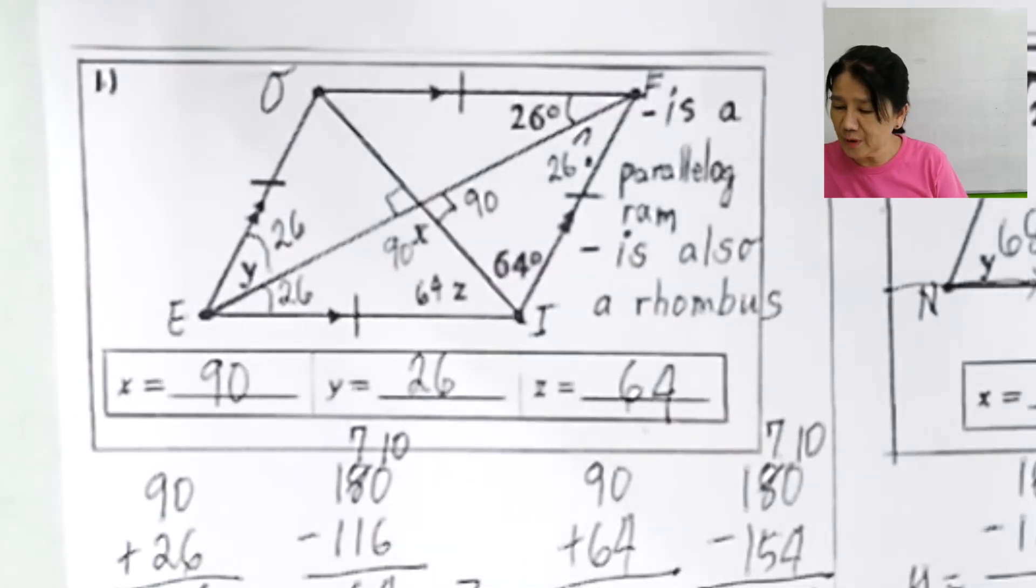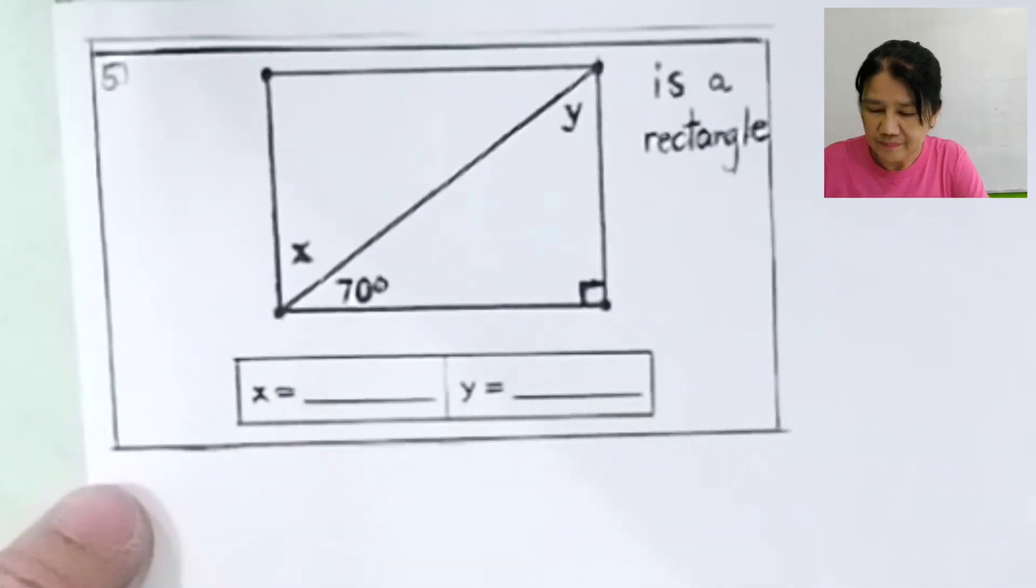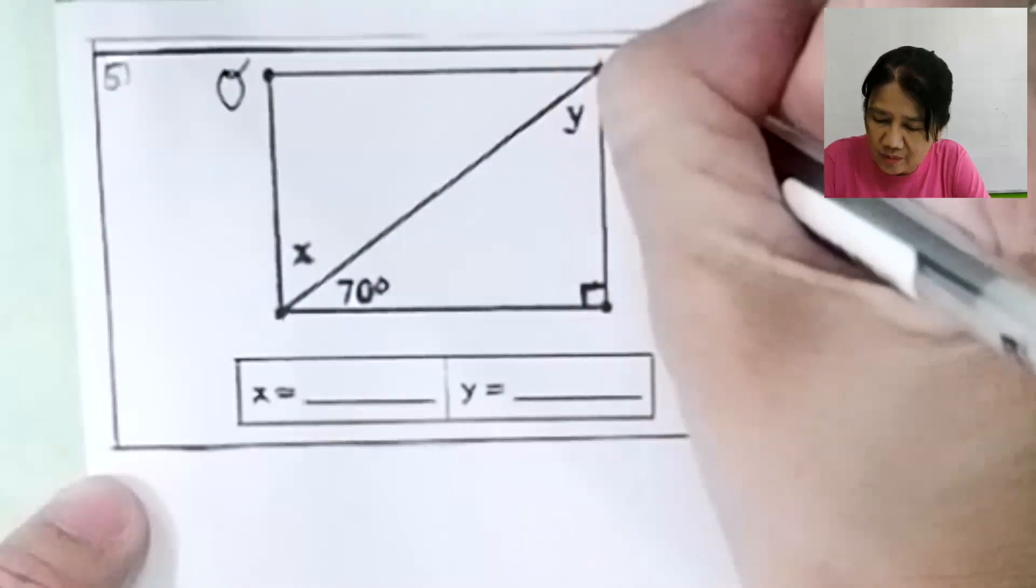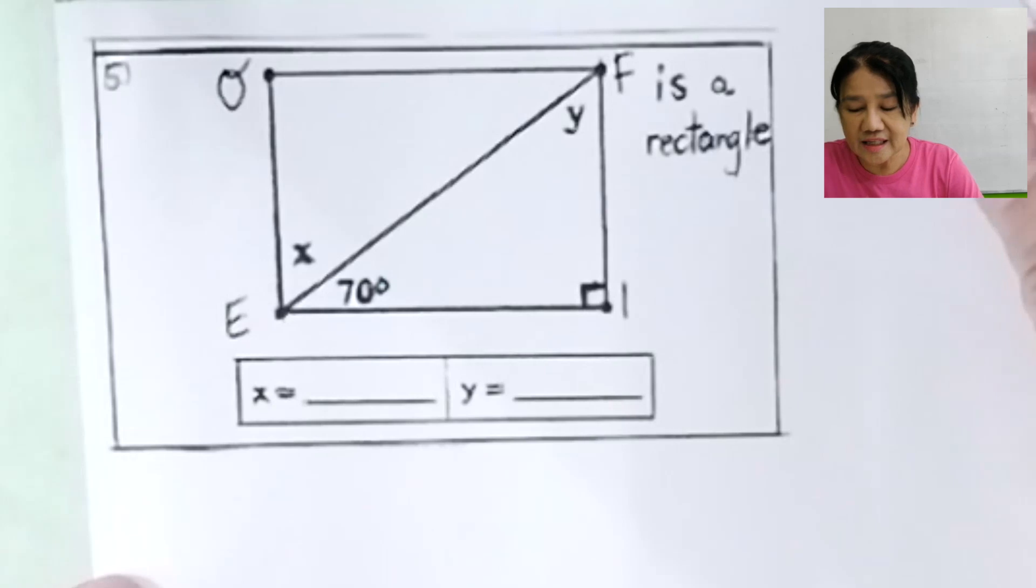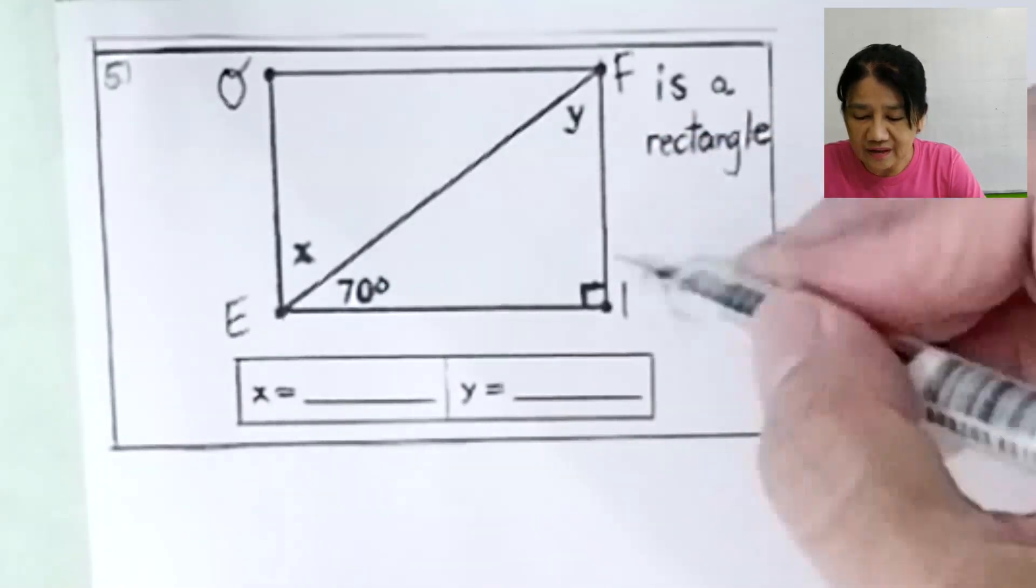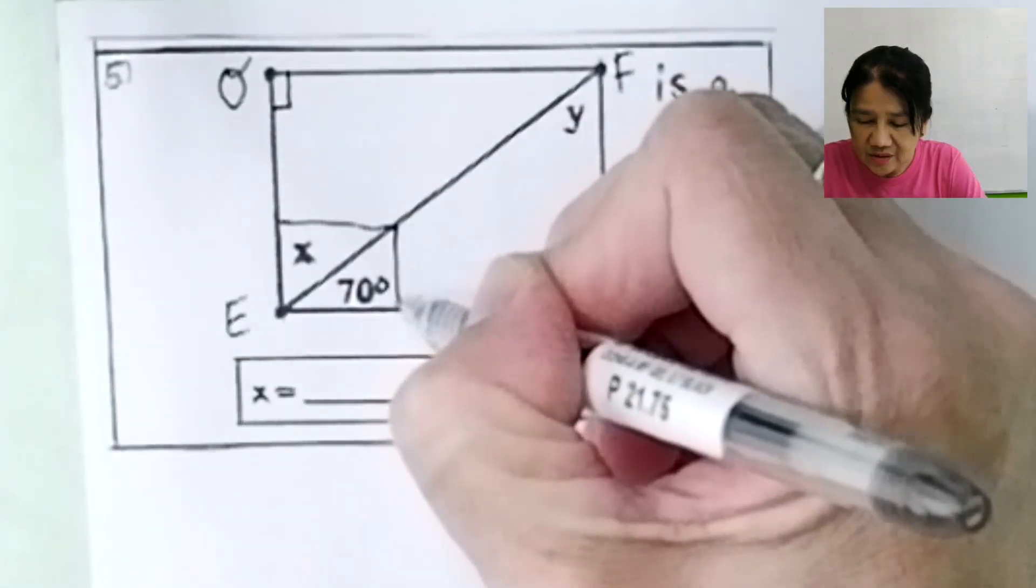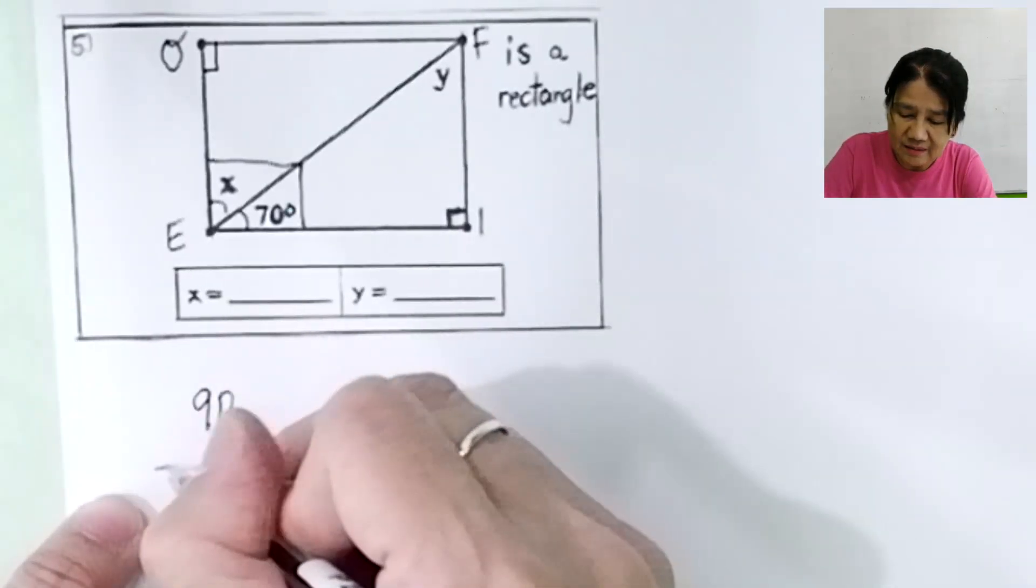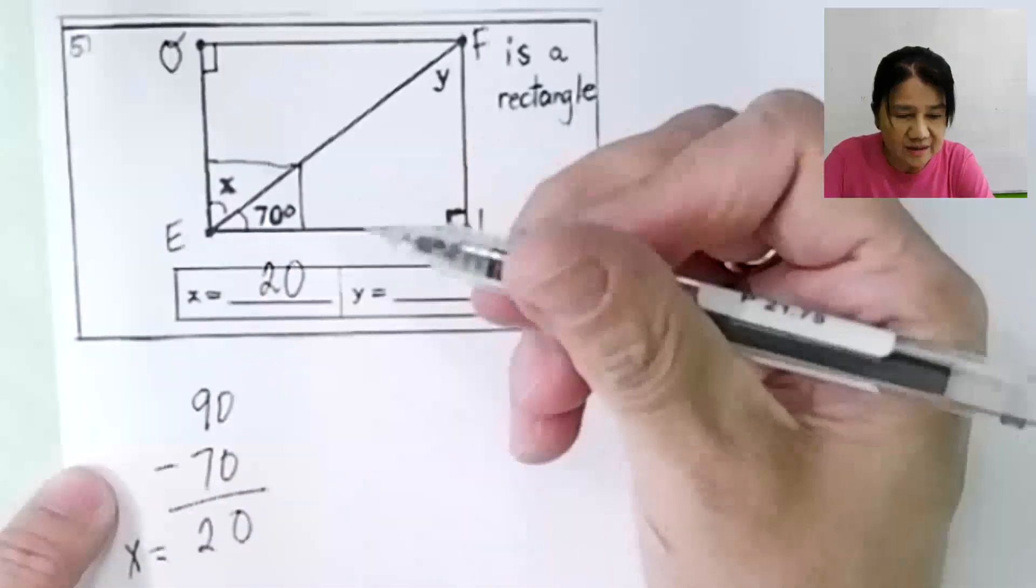Let's move on to problem number 5. Let's call this quadrilateral OFIE is a rectangle. The angles of a rectangle are 90 degrees, all 90 degrees. So if this is 70 degrees, x must be 90 minus 70. You get 20. That is x. So x is 20 degrees here.